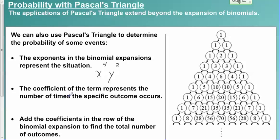Second thing we need to keep in mind is the coefficient, which is represented by Pascal's triangle. So all of these numbers represent the coefficients of the terms. That represents the number of outcomes of that specific event occurring.